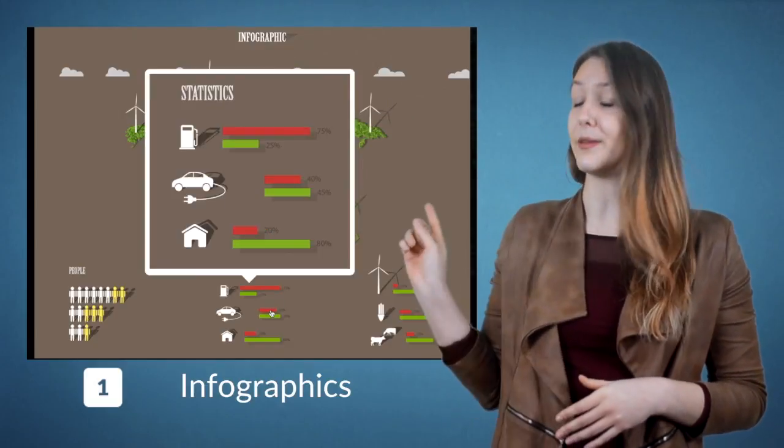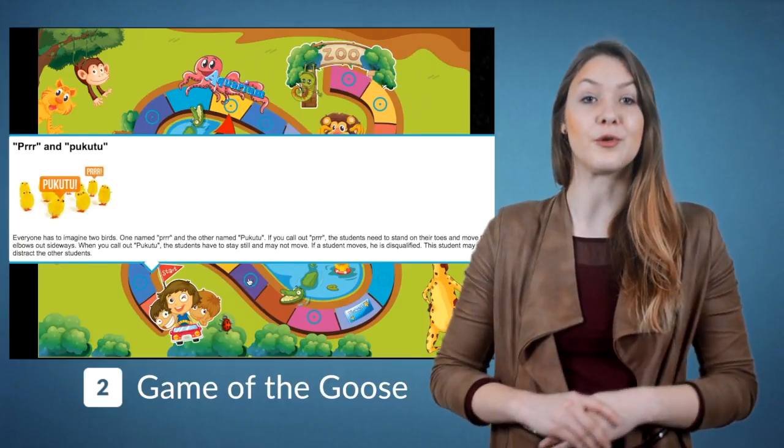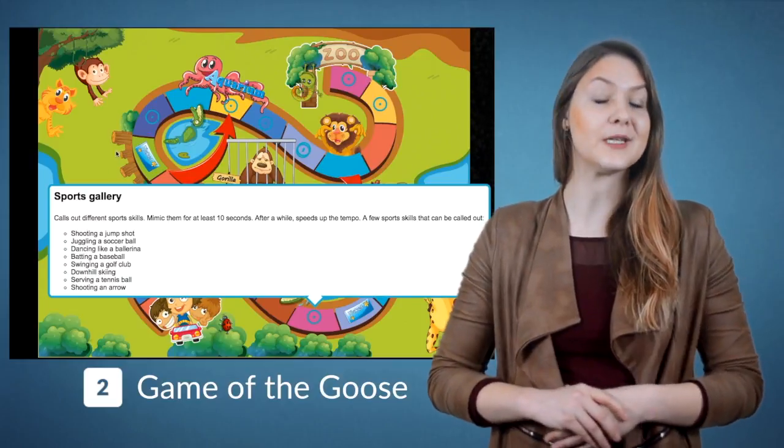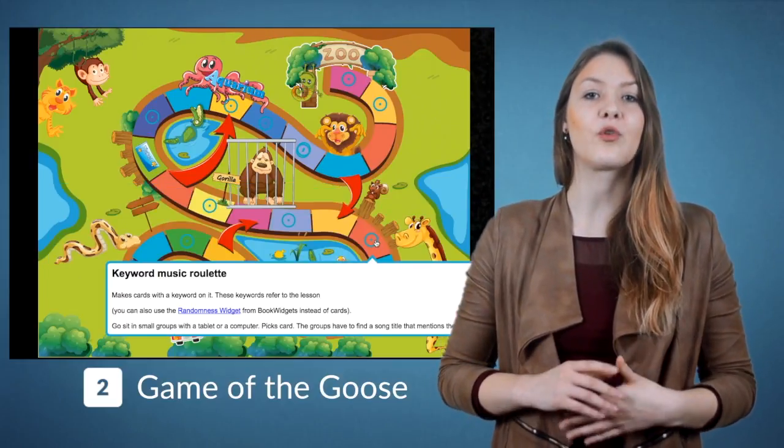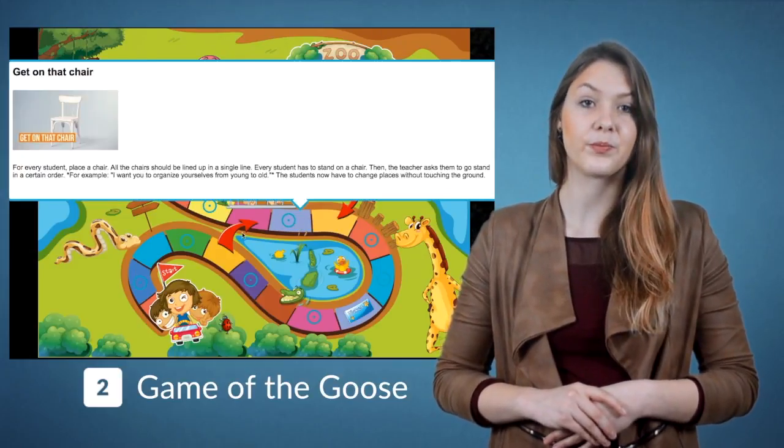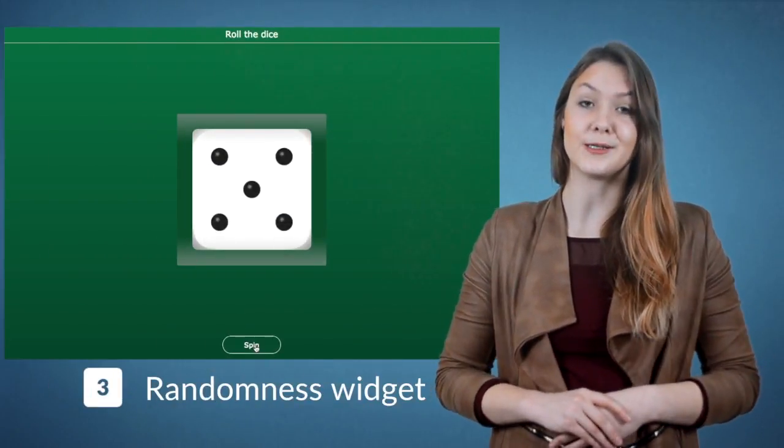Remember the old board game called Game of the Goose? It's a perfect fit for using hotspot images. You can make the board interactive. I've combined the game with some great energizers for students. Each field gives an energizer game for your students to play, and you can use the randomness widget to roll the dice.